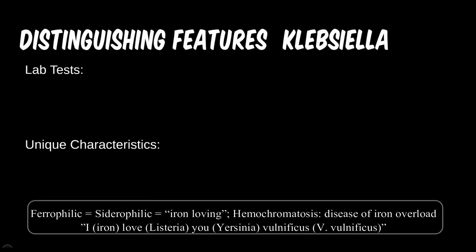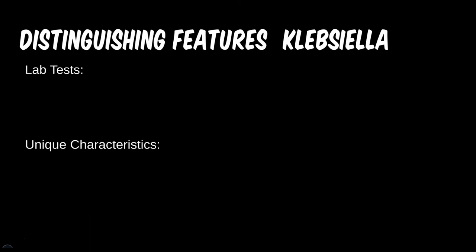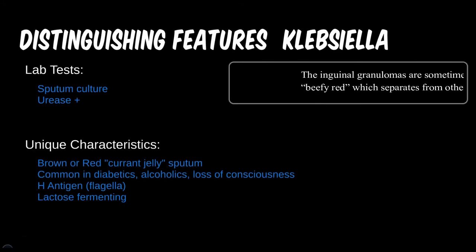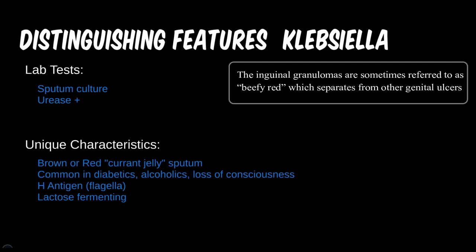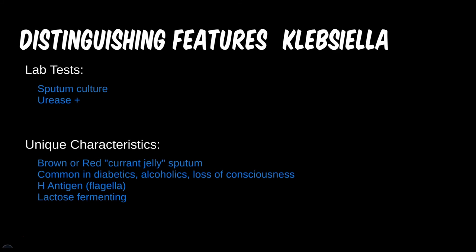For Klebsiella, respiratory infections are often first hinted at by a patient's presentation that leads to a chest X-ray. To distinguish between different respiratory pathogens, a sputum culture can be obtained. Urease positivity is one of the unique features that can distinguish this on a test question from most respiratory microbes, with the exception of possibly Pseudomonas. Genital lesions are usually diagnosed by clinical presentation alone. Remember the current jelly sputum descriptor for this on test questions. A particular demographic in which it is more common would be those prone to aspiration, such as those that are weak or unconscious. Also, as this is one of the three common MacConkey agar bugs, if that is mentioned in a question, it should be a great clue.